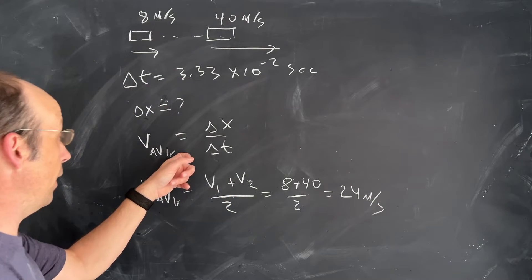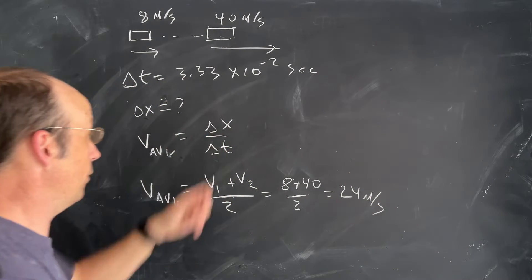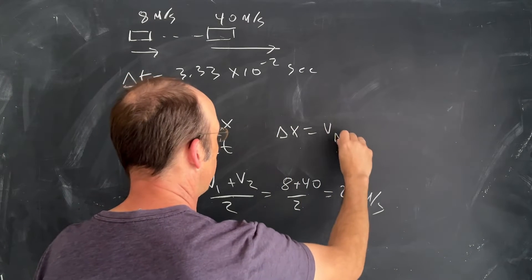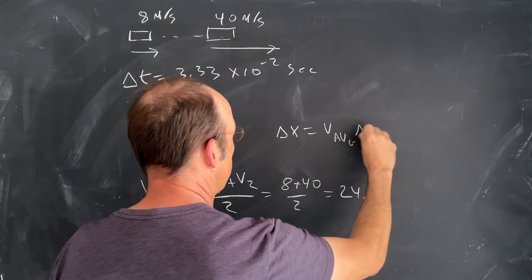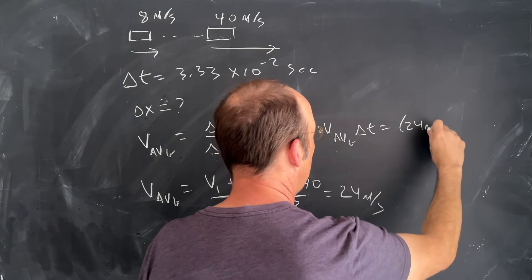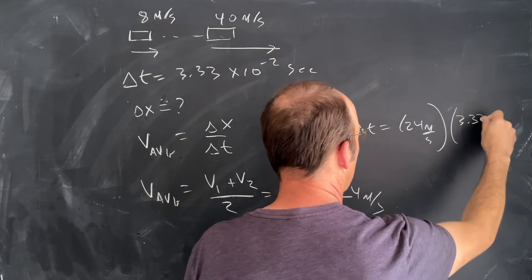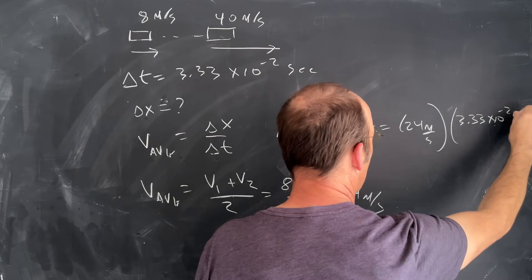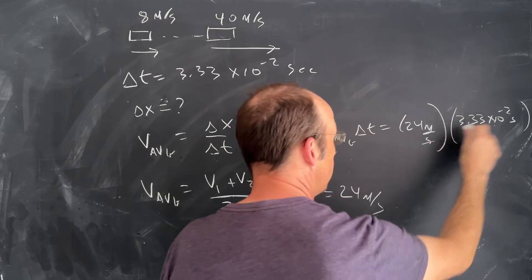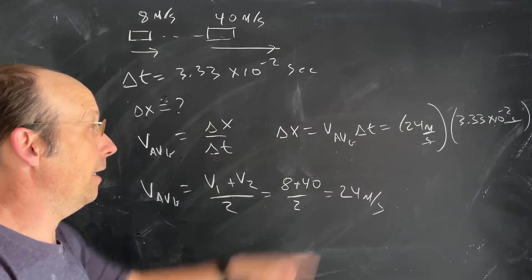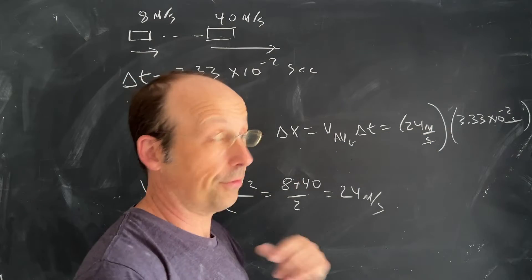Now, over here, I know the average velocity. I can solve for delta x. Delta x is going to be v average delta t, so that's going to be 24 meters per second times 3.33 times 10 to the negative 2 seconds. And you'll notice the seconds cancel. That's a win, right? And the units we're left with is meters. That's what we want.